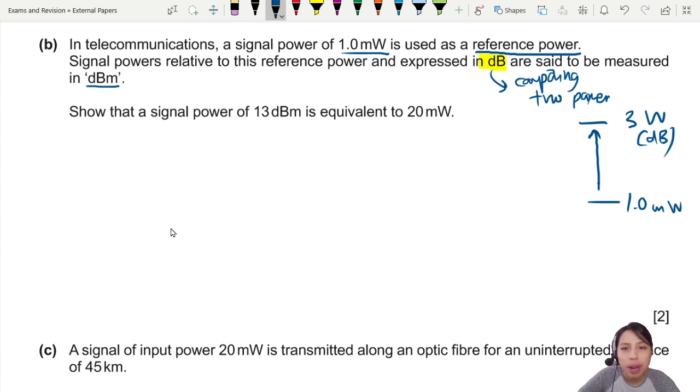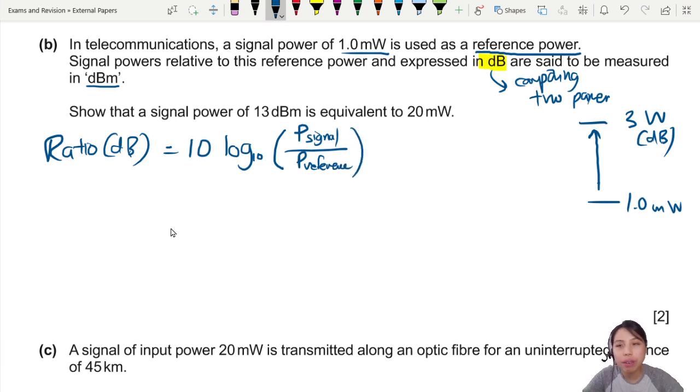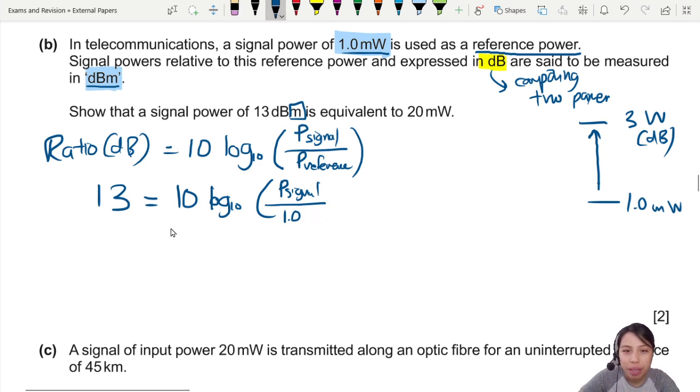We need to find the signal power, right? So we stay calm and start off with the ratio dB equation. So the ratio in dB is going to be 10 log₁₀, and we want to compare signal to reference, so signal with respect to a reference power. Now we plug in everything we know. If we are comparing with 1 milliwatt reference, it's just a special dBm to let us know you're comparing with that reference power. So 13 dBm, comparing signal to that reference power 1.0 milliwatt.